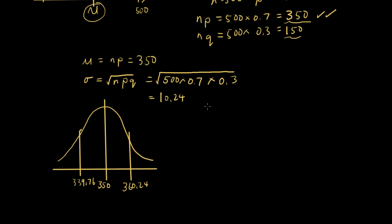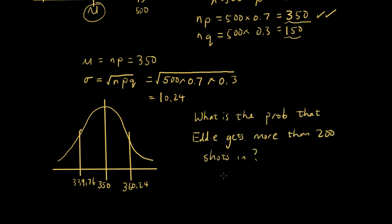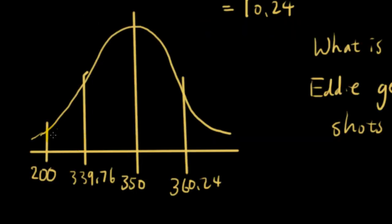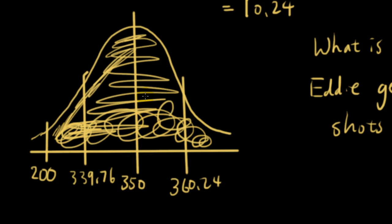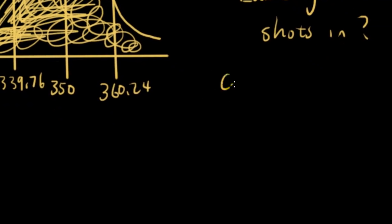Now we can use this to answer the question: what is the probability that Eddie gets more than 200 shots in? On the curve, 200 would be somewhere far to the left. We want the probability of getting more than 200, so we're highlighting all of the area to the right of 200. Now there is one thing I need to talk about, and that is called continuity correction.